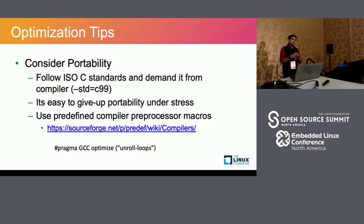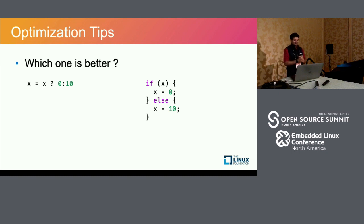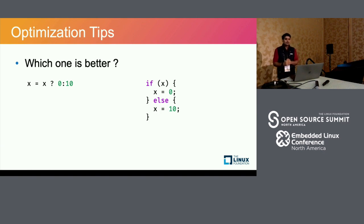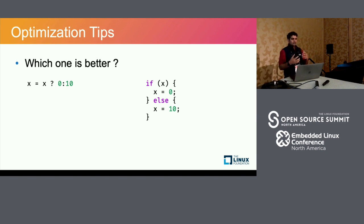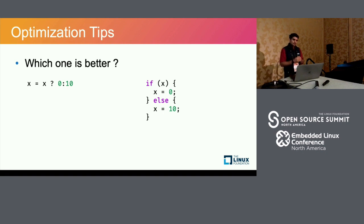A ternary operator and an if-else statement generate the same code — they are equivalent. Don't assume that shorter-looking code will generate smaller binary output. The ternary operator will generate the exact same amount of code as the if-else, and in some cases may even generate worse code. Always measure and look at what's actually being generated from your source.